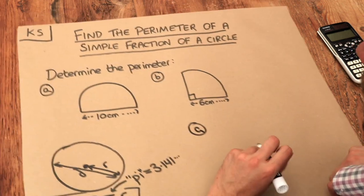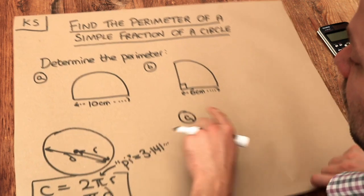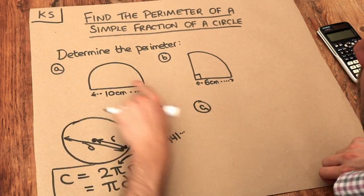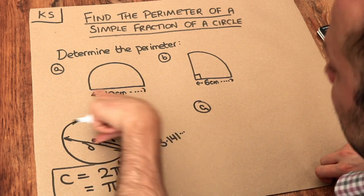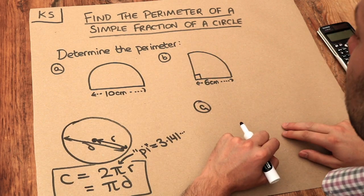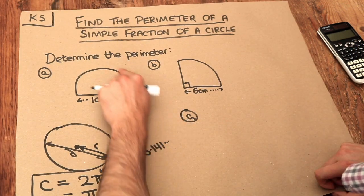Now the reason I've said it's the perimeter of this shape rather than the circumference is because circumference only refers to the perimeter of a full circle. If you start dealing with fractions of circles and adding extra lengths on as well, we don't have a circumference anymore. We've just got a bog-standard perimeter. So let's work out the perimeter of this shape.